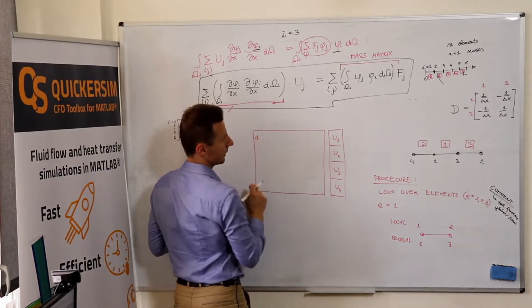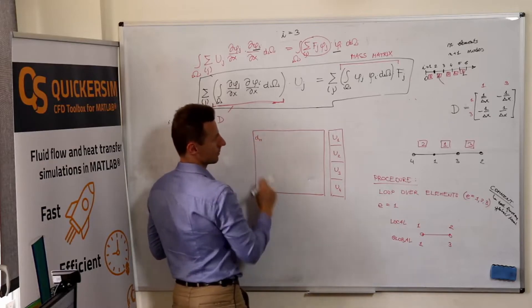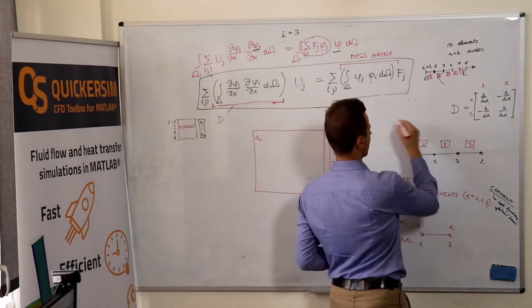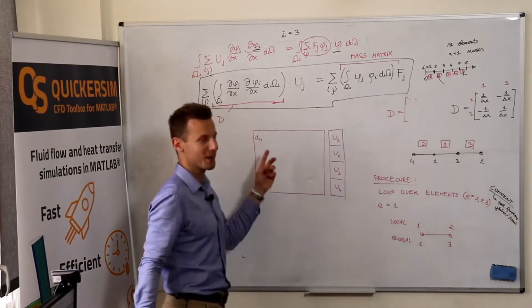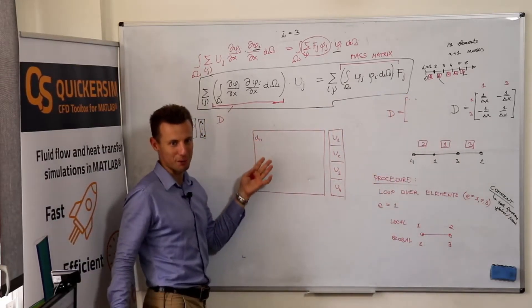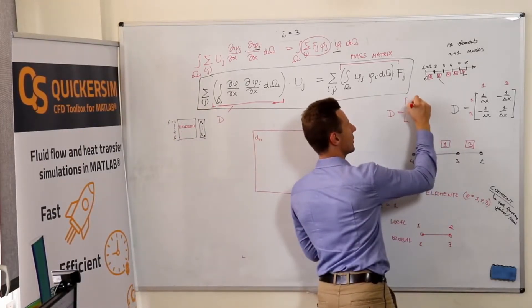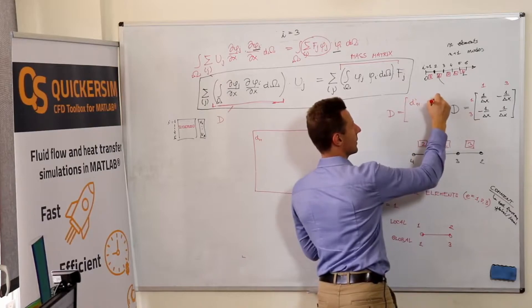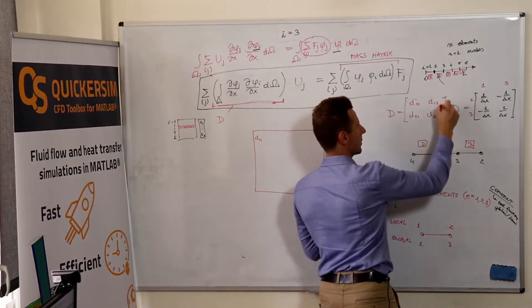So what happens is, let me write this way. It's D, it's D one-one. I don't want to write one over delta x all the time because it won't show you anything. So let me call it D one-one, D one-two, D two-one, D two-two. So it's D one-one of the first element.